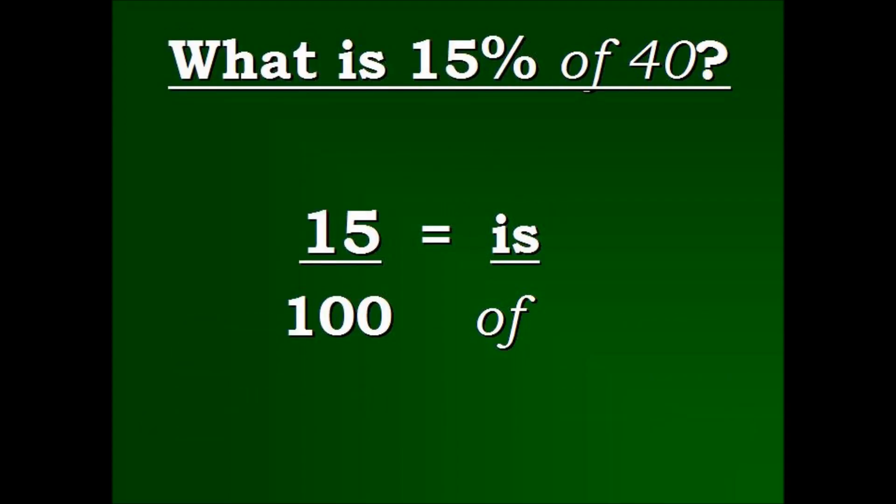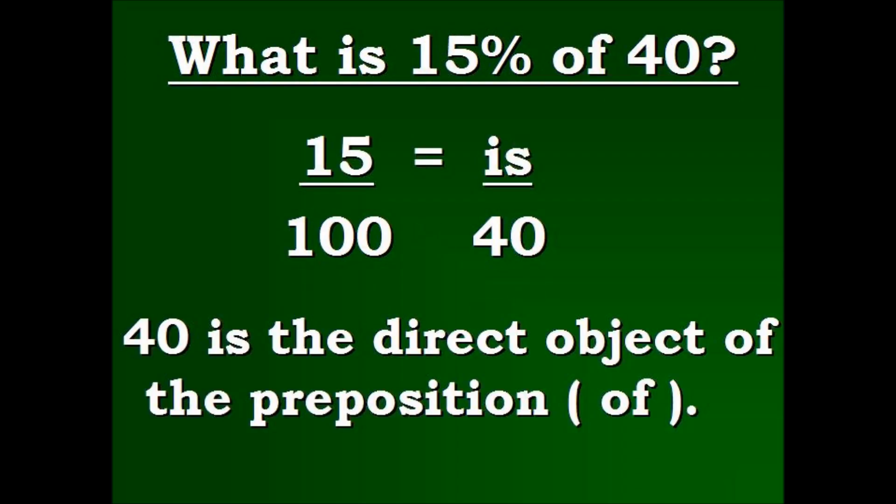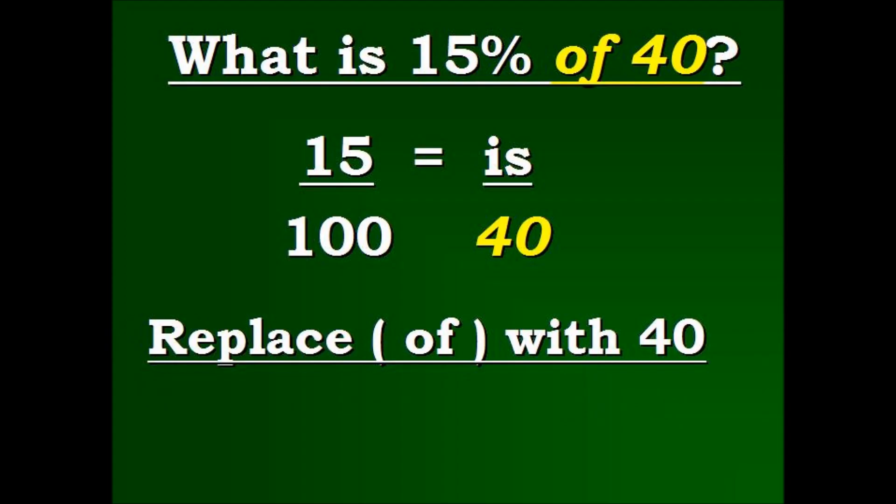Next, you see the parts that are flashing, the of forty. And for all you English majors out there, of is a preposition. So forty must be the direct object of the preposition. Thus, we place forty where of is in our formula.